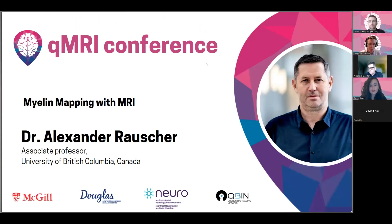Dr. Rocher obtained his PhD in Engineering Physics at the Technical University of Vienna in Austria, working on susceptibility-weighted imaging. He's the Canada Research Chair in Quantitative MRI and Associate Professor at UBC's Department of Pediatrics. He will be following up on the excellent talks this morning and talking more about myelin mapping with MRI.